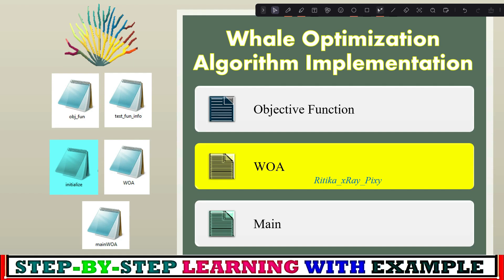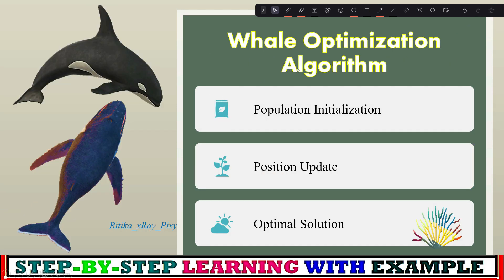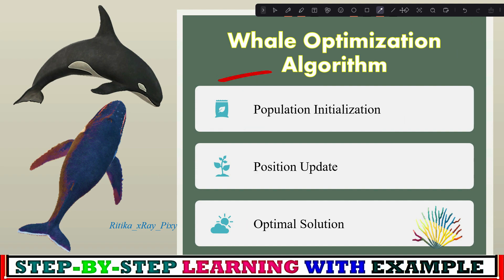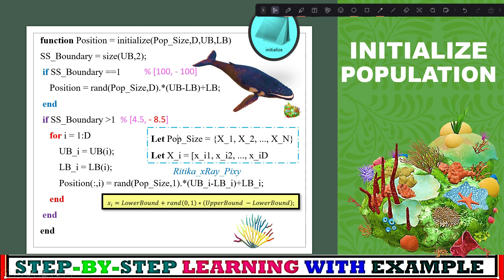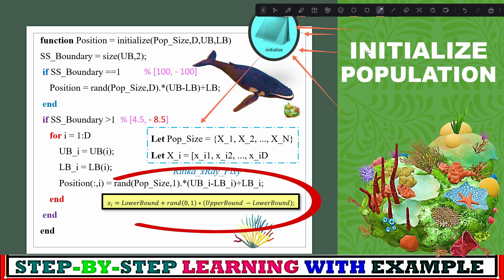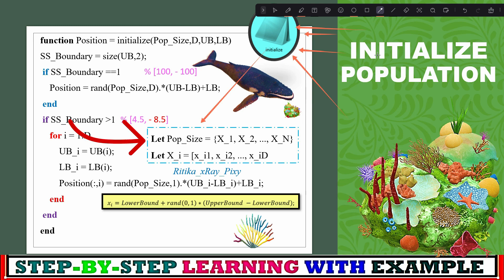Next, we apply the whale optimization algorithm on the objective functions f1 and f2. As discussed, the algorithm first initializes the population, then updates positions of the search agents, and displays the optimal solution when stopping criteria is met. We create a file to initialize the population for search agents in the search space. Using a specific equation, we can initialize the population for n agents.